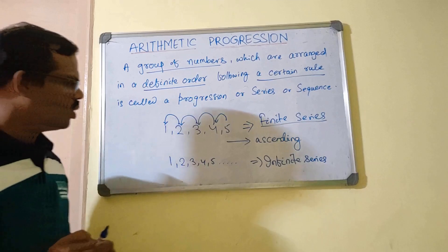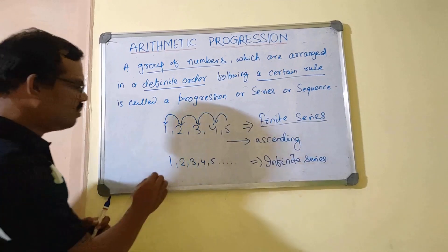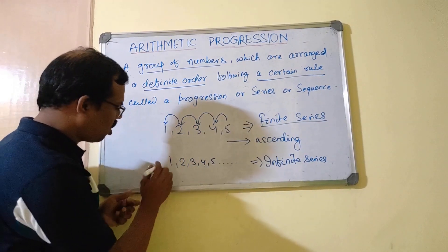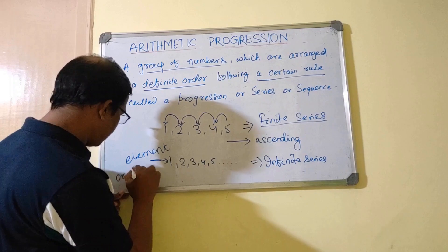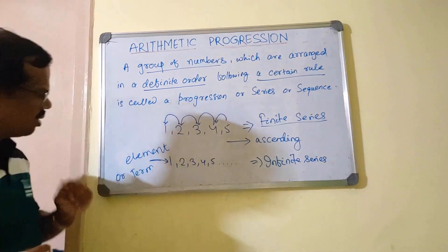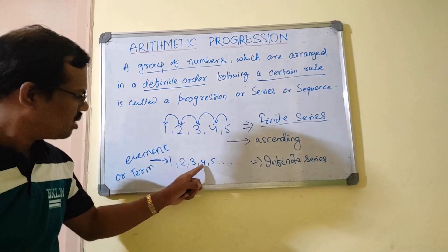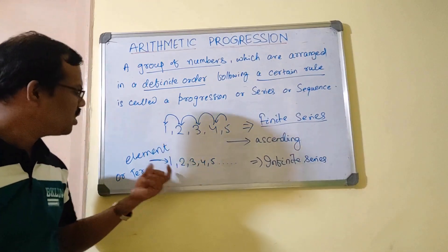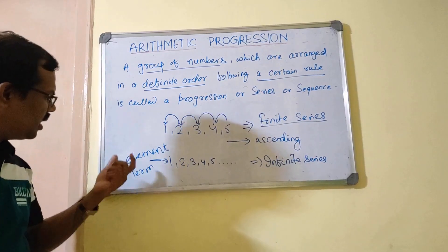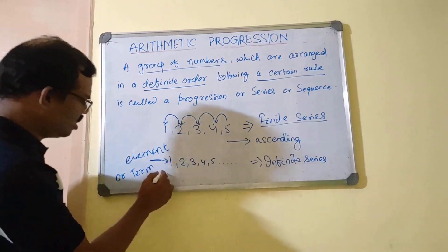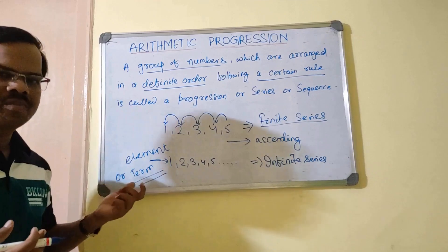Another term I am introducing is called element. Every single component of this series is called an element. One is an element of this series, similarly two, three, four, five — all are elements of this series, or this progression, or the sequence. They are also called terms. You should remember these words because we will be frequently using them going forward.